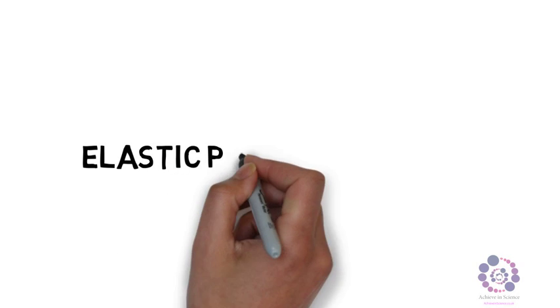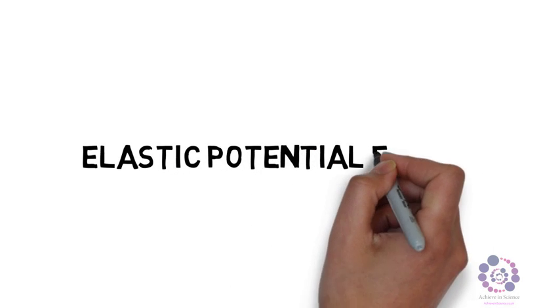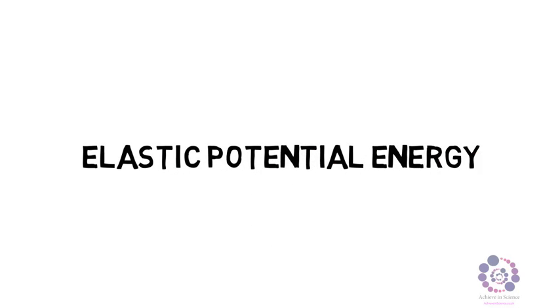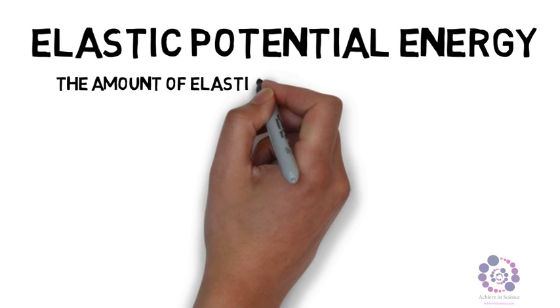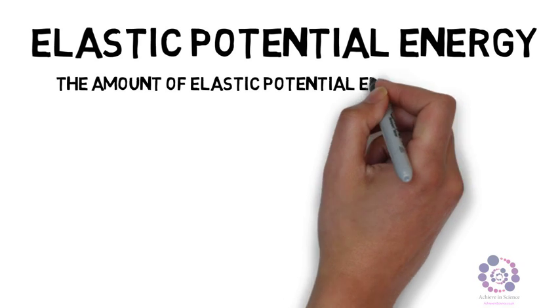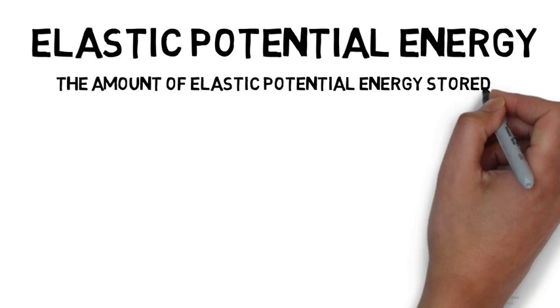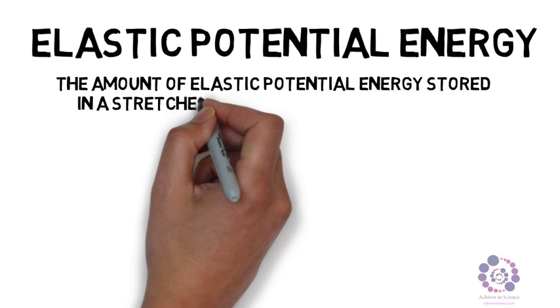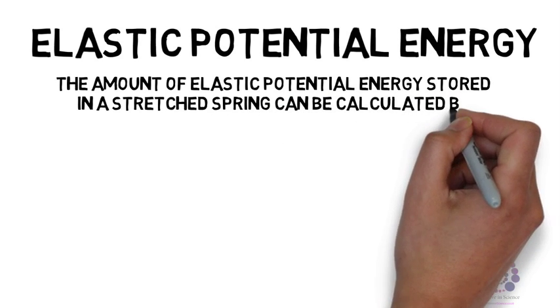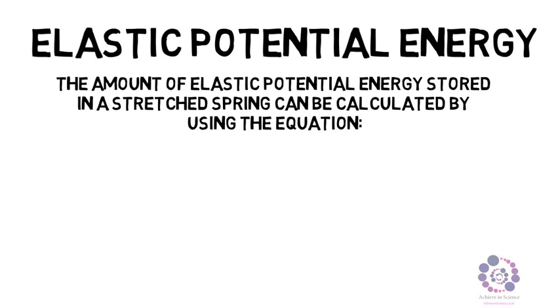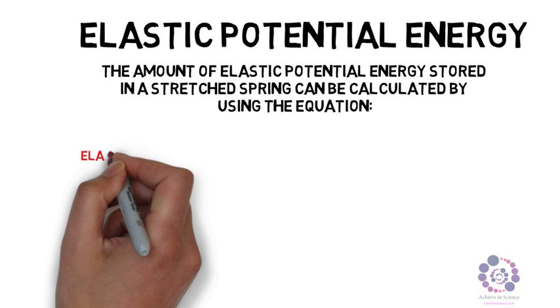Let's now look at elastic potential energy. The amount of elastic potential energy stored in a stretched spring can be calculated using an equation. The equation for calculating elastic potential energy is a half, or 0.5, times by the spring constant, times by extension squared.